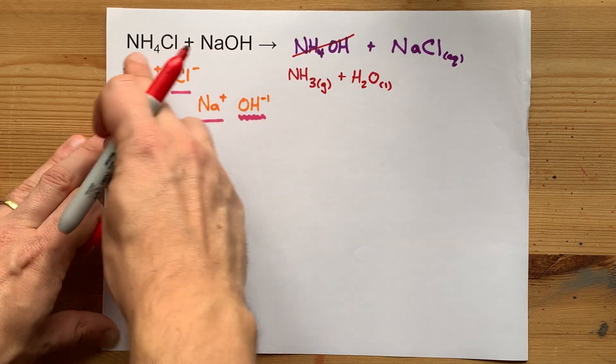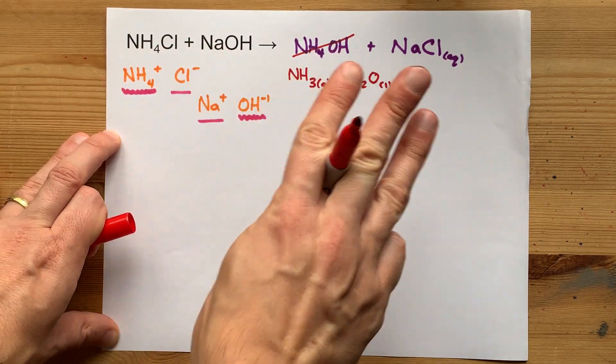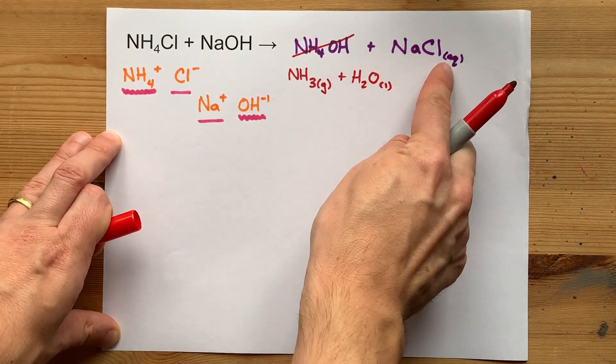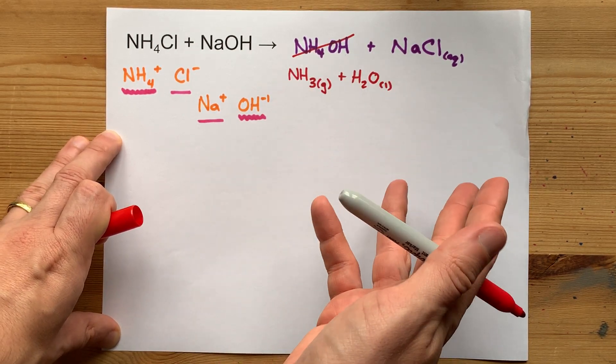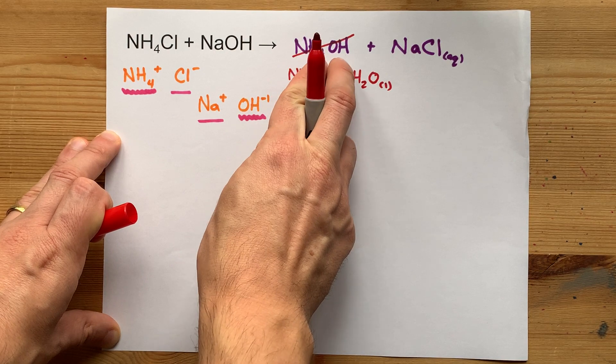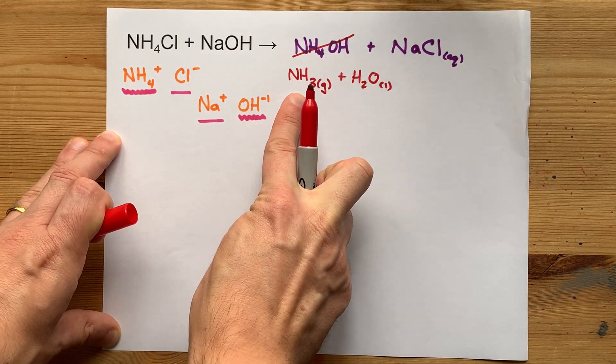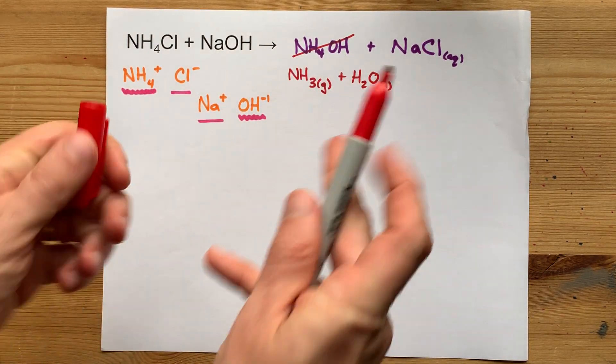If you are answering the question, what are the products of this, and it's worth three marks, it's because NaCl is one and NH4OH also is present, but it decomposes to ammonia and water. There you go.